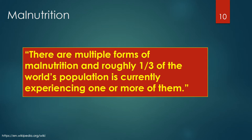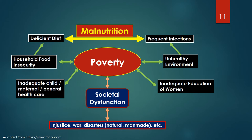There are multiple forms of malnutrition and roughly one-third of the world's population is currently experiencing one or more of them. Poverty is often a central factor. The underlying causes of poverty are complex, multifactorial and bidirectional, associated with injustice, war, natural or man-made disasters, that result in societal dysfunction, upsetting the economics of countries, communities and families.